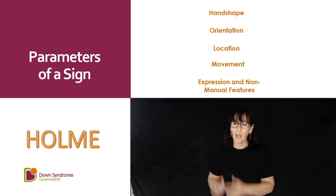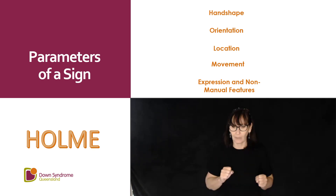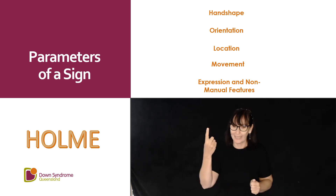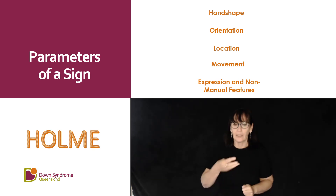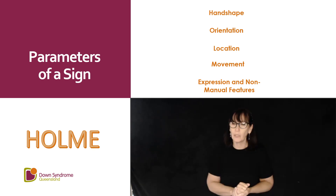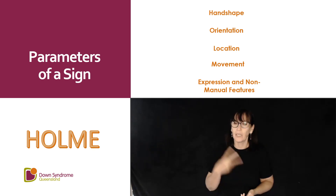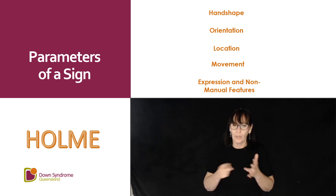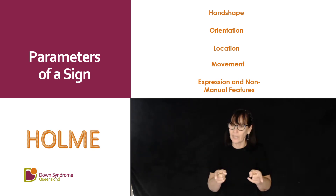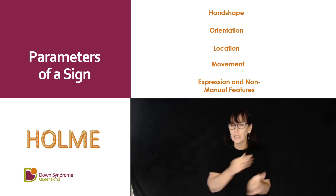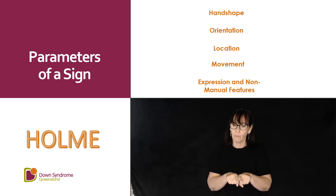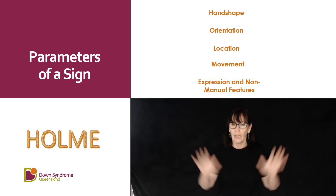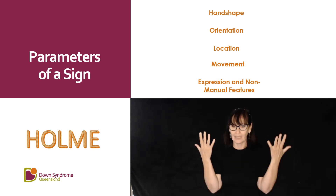The parameters of signs are made up of the acronym HOME. The first one: handshapes. There are 38 common handshapes and we'll be using approximately 12 different handshapes with the signs we use today. Orientation differentiates signs that share the same location, hand shape and movement. It is important to specify two orientations: that of the palms and that of the hands.